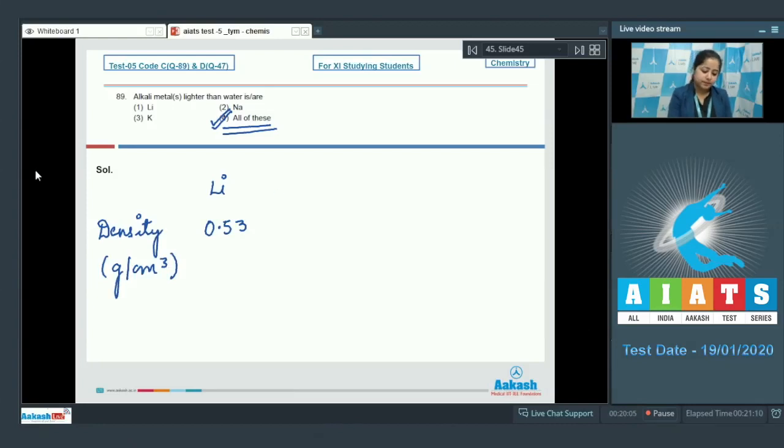The density of sodium is 0.97 grams per centimeter cube. The density of potassium is 0.86 grams per centimeter cube, and the density of water is 1 gram per centimeter cube.